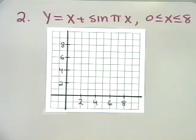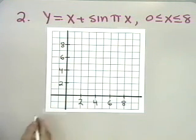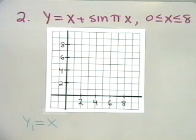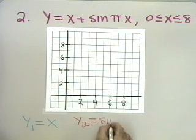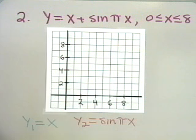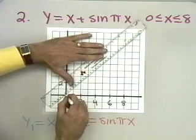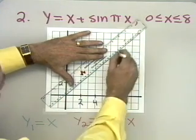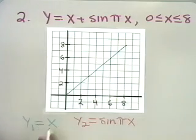Let's try another one. This time we have a combination of an algebraic function and a trigonometric function. I'm going to set y1 equal to x and y2 equal to sin(πx). Let's graph y1 first — y1 equal to x is just a straight line starting at the origin. Here is the graph of that first function, y1 equal to x.